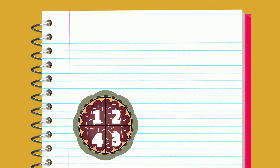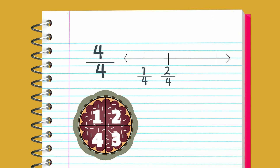Now it's homework time. The first cake was one whole that was cut into four equal pieces. We can show that on a number line by making four equal sections and labeling each one.